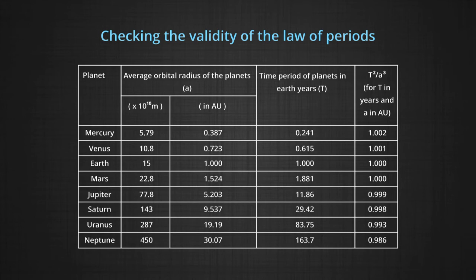We can see an interesting result from the table. If the orbital radii of the planets is measured in astronomical units, which is the distance of the earth from the sun, and their orbital period is measured in earth years, the ratio of the square of the time period and the cube of their orbital radius comes out to be nearly one for all the planets.